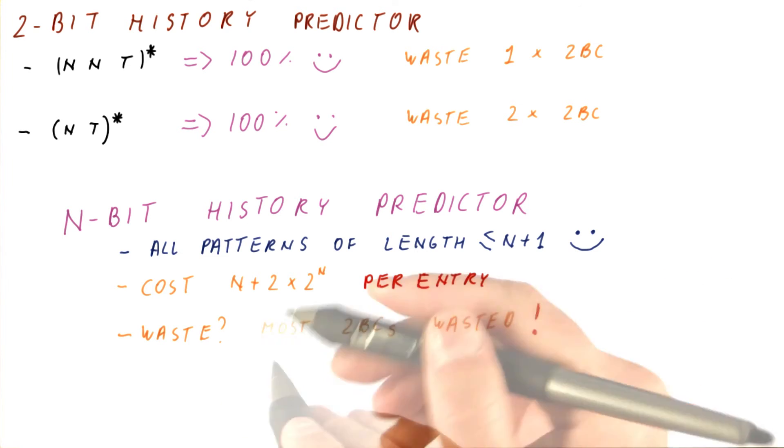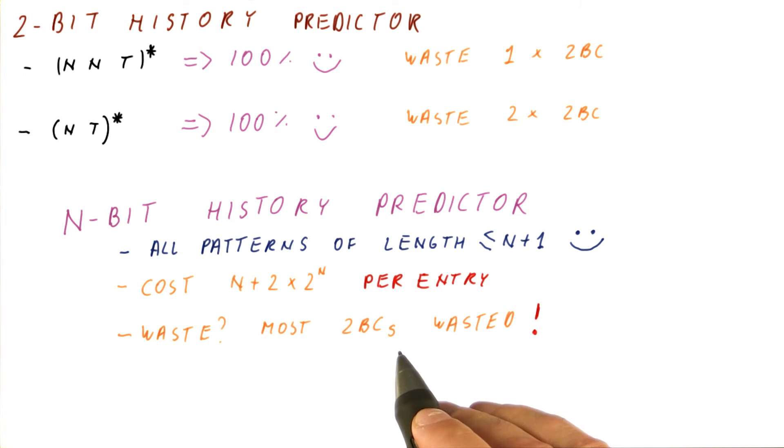And how about the waste? Most of the two-bit counters that we have in our entry will be wasted. Why? Well, because if we have, for example, a 10-bit history...